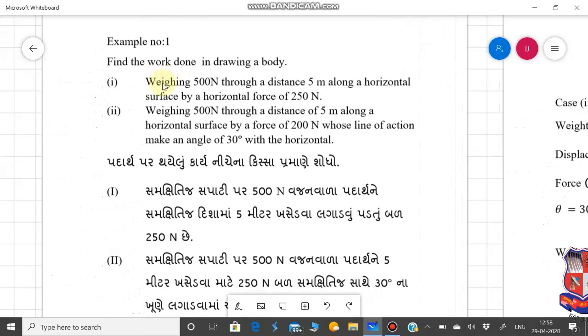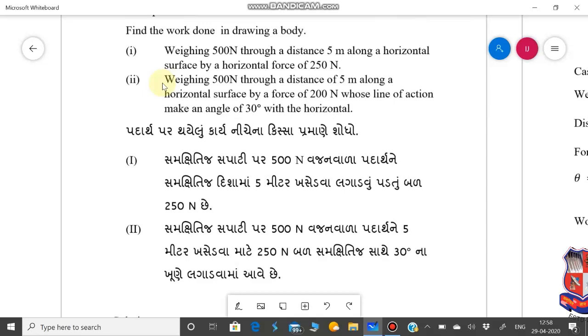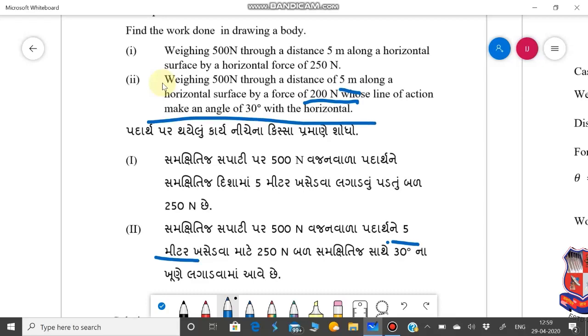Now, second case. We see the second case. The weighing of a body is 500 Newton. Same way, a body is 500 Newton. Here is the body. Move the body 5 meter. It is horizontal, the surface is horizontal. But the force is 200 Newton, and the force is at 30 degrees.